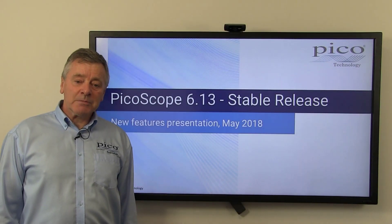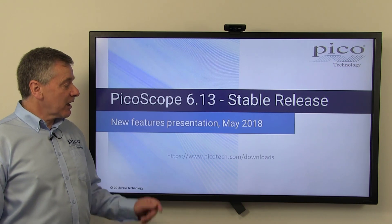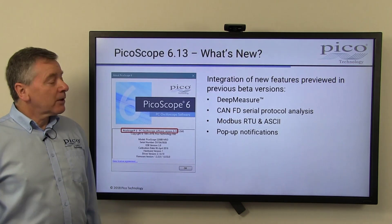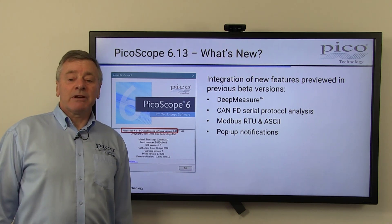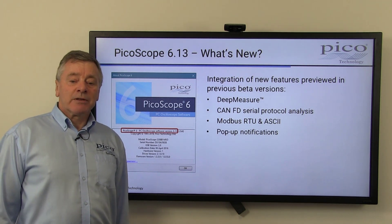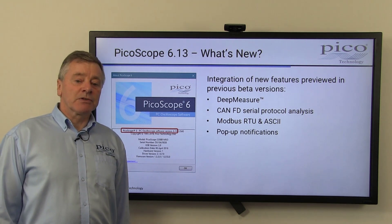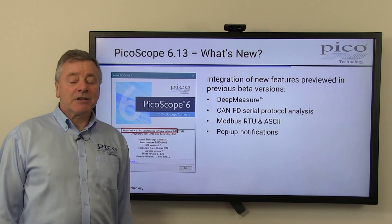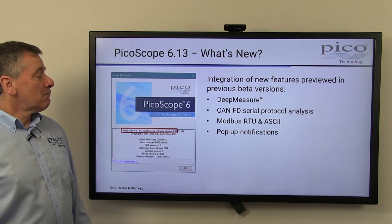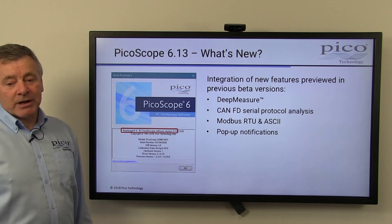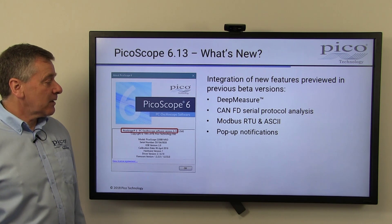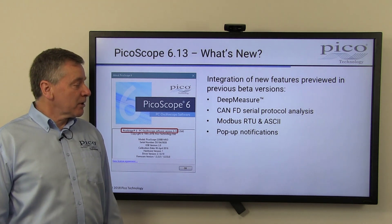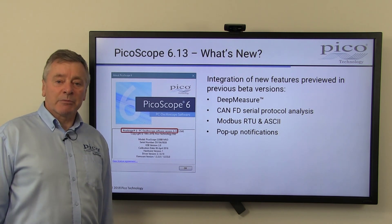The latest version of Picoscope 6.13 is available to download now, free of charge. With this version, we have integrated some powerful features that have been previewed in recent versions of the software, including the award-winning DeepMeasure tool, CAN-FD serial protocol analysis, Modbus RTU and ASCII serial bus decoding, and pop-up notifications that appear when accessories and probes are connected or disconnected from your Picoscope.